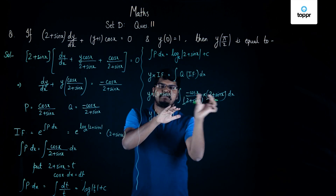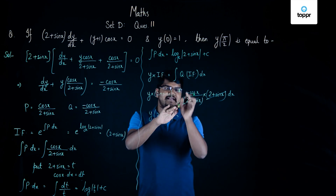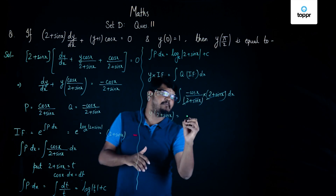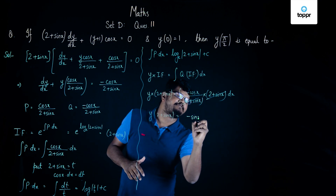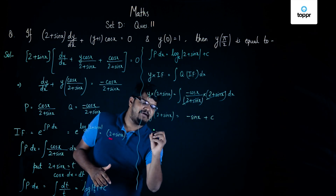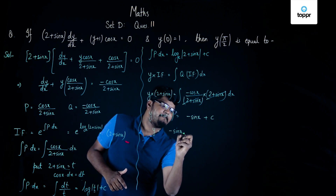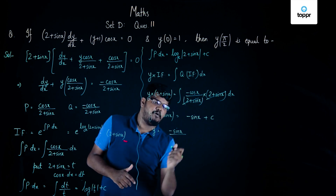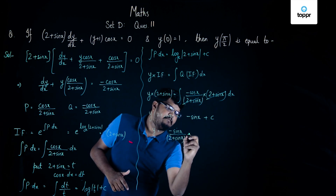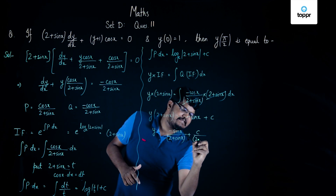We know that ∫cos x dx = sin x + c, so ∫−cos x dx = −sin x + c. Therefore y · (2 + sin x) = −sin x + c, which gives y = −sin x/(2 + sin x) + c/(2 + sin x).